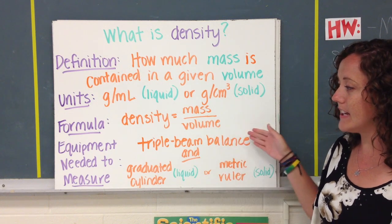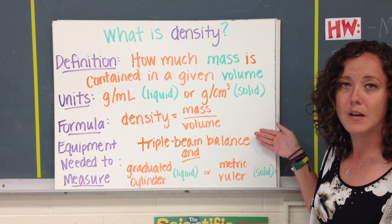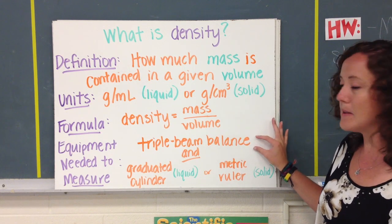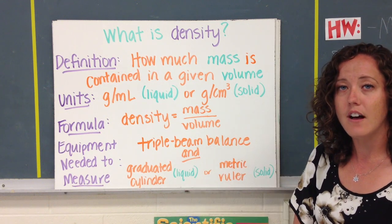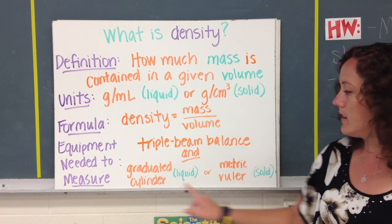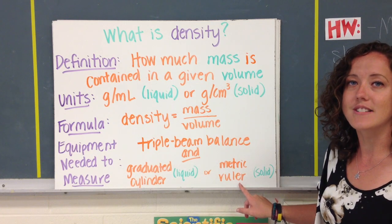So because of those measurements, we need to use that familiar equipment that we had last week. The triple beam balance will measure the mass, and then depending on whether we have a liquid or a solid, we would use a graduated cylinder for a liquid or the metric ruler for a solid.